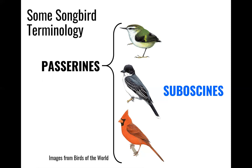Our kingbird here in the middle is what we call a suboscine. Suboscines are a distinct group or clade within Passeriformes that largely occurs in South America. They have relatively simple songs, and what's unique about suboscines is that many of them — in fact the majority — come genetically pre-loaded with their songs. There's no learning period; they hatch from the egg and already know how to sing their species' songs. Minnesota has only a handful of suboscines like this kingbird, and I won't talk about them today, but please ask me questions about them if you do have questions.